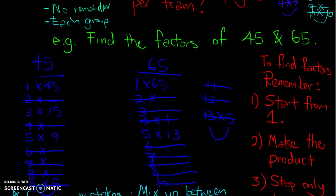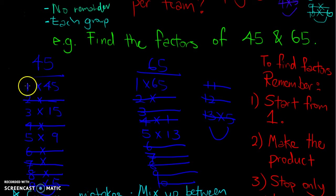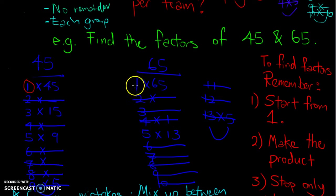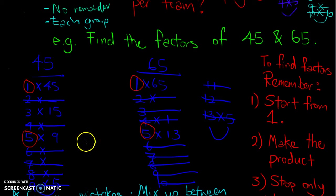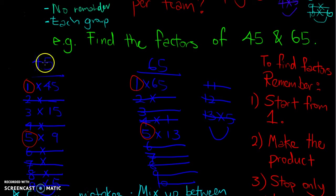In the exam, they may also ask for the common factors of 45 and 65. Compare side by side: 1 — common factor, yes; 3 — no; 5 — yes; 9 — no; 15 — no; 45 — no. So the common factors of 45 and 65 are 1 and 5.